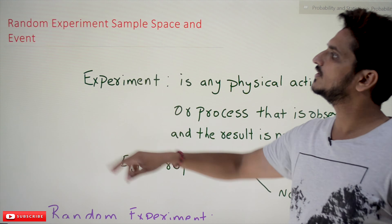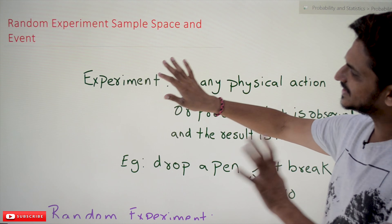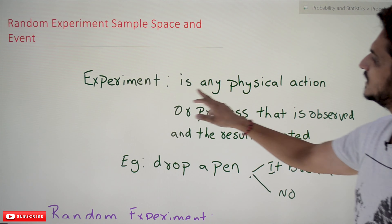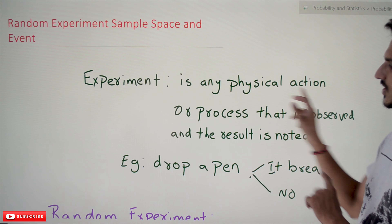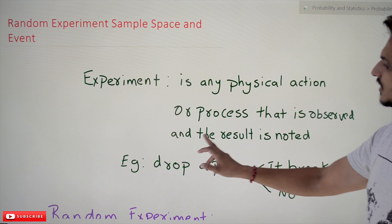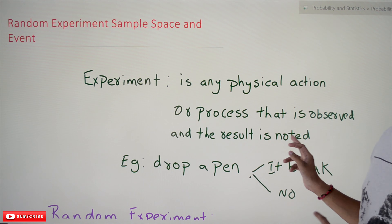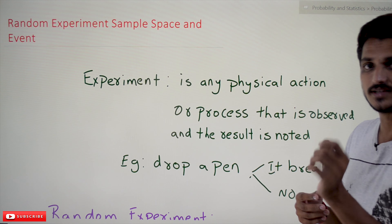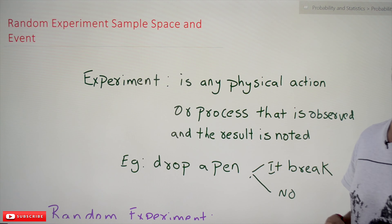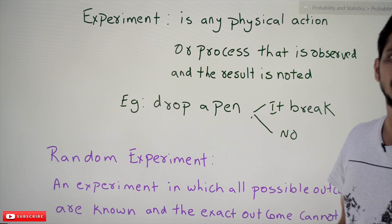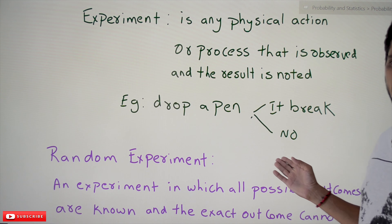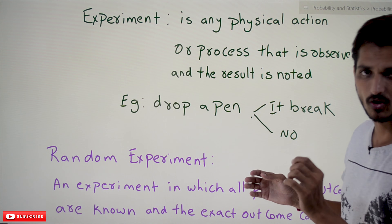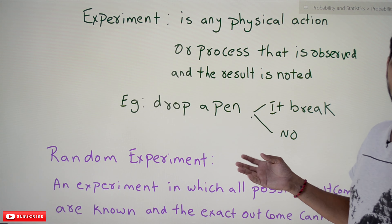Coming to the definitions — random experiment. Before going to understand what random experiment means, first we will understand what experiment means. Experiment means it is a physical action or process that is observed and the result is noted. You do any physical action or process, that process is observed and the result is noted — that is what experiment means. Example: drop a pen. It is an experiment. It may break or it may not break, so that is the output you are taking note of. This is an experiment.